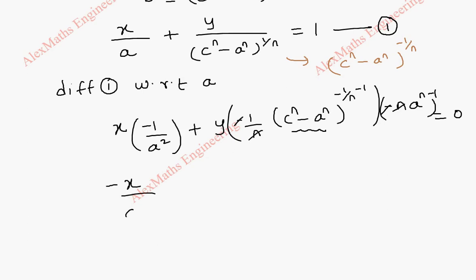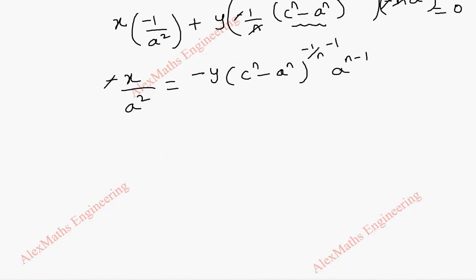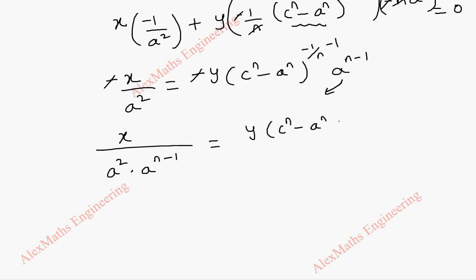This gives minus x/a² equal to, taking the term to the other side, minus y·(c^n - a^n)^(-1/n - 1)·a^(n-1). We cancel the two minuses, and this a^(n-1) we take to the denominator of the other side. So this is x/(a²·a^(n-1)), which equals y·(c^n - a^n)^(-1/n)·(c^n - a^n)^(-1), splitting into two parts.